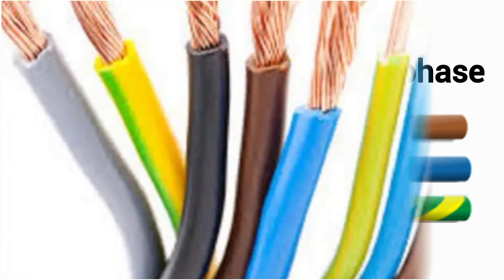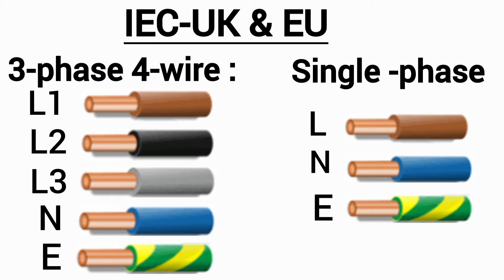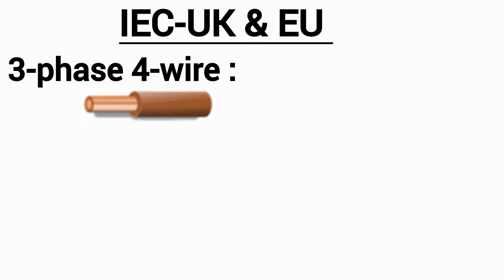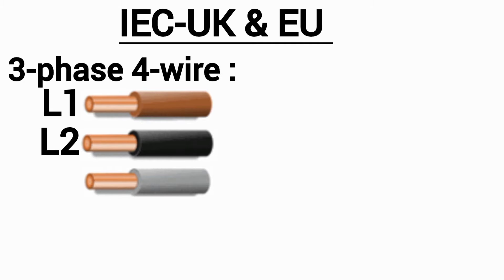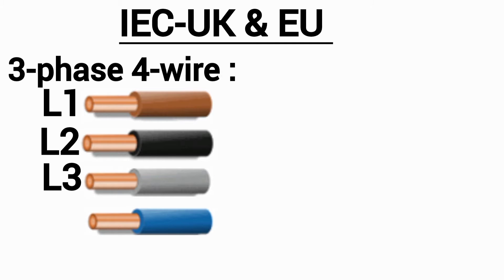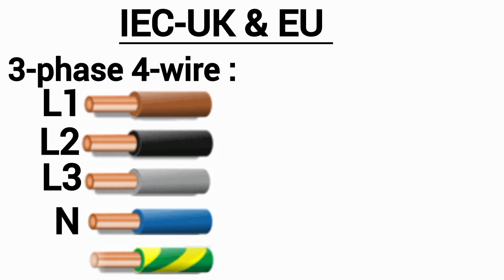Alright, so let's start with the IEC. The color scheme commonly adapted by countries following IEC guidelines is as follows: brown is used to represent L1, black is used to represent L2, gray is used to represent L3, blue is used to represent neutral, and yellow with green stripes to represent the protective earth.